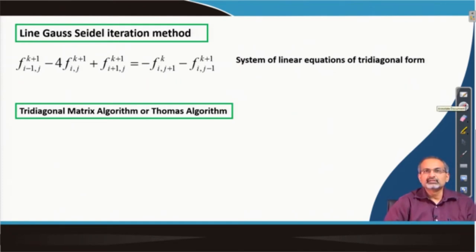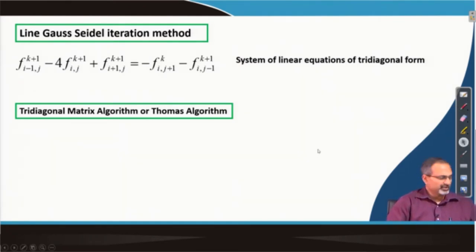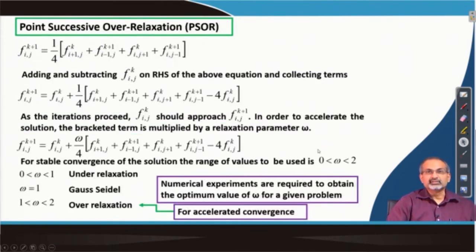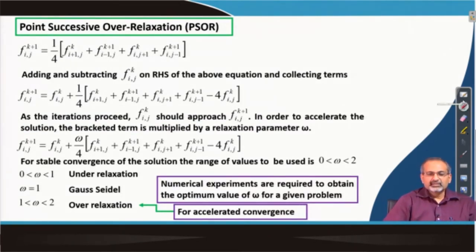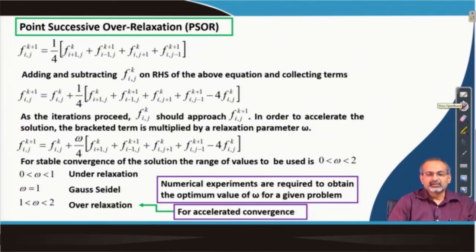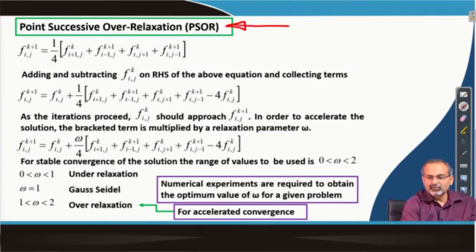Having understood this, let us look at some other possible ways of solving elliptic partial differential equations. A very powerful method to accelerate convergence of solution of elliptic PDEs by iterative means is what is called the point successive over-relaxation method.